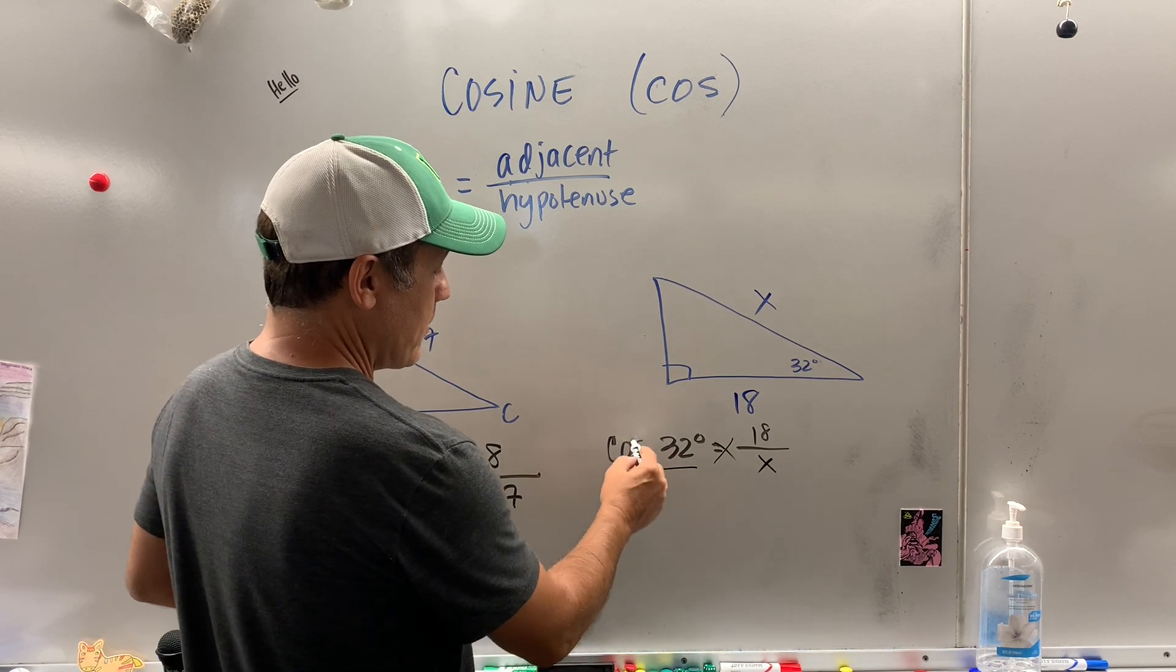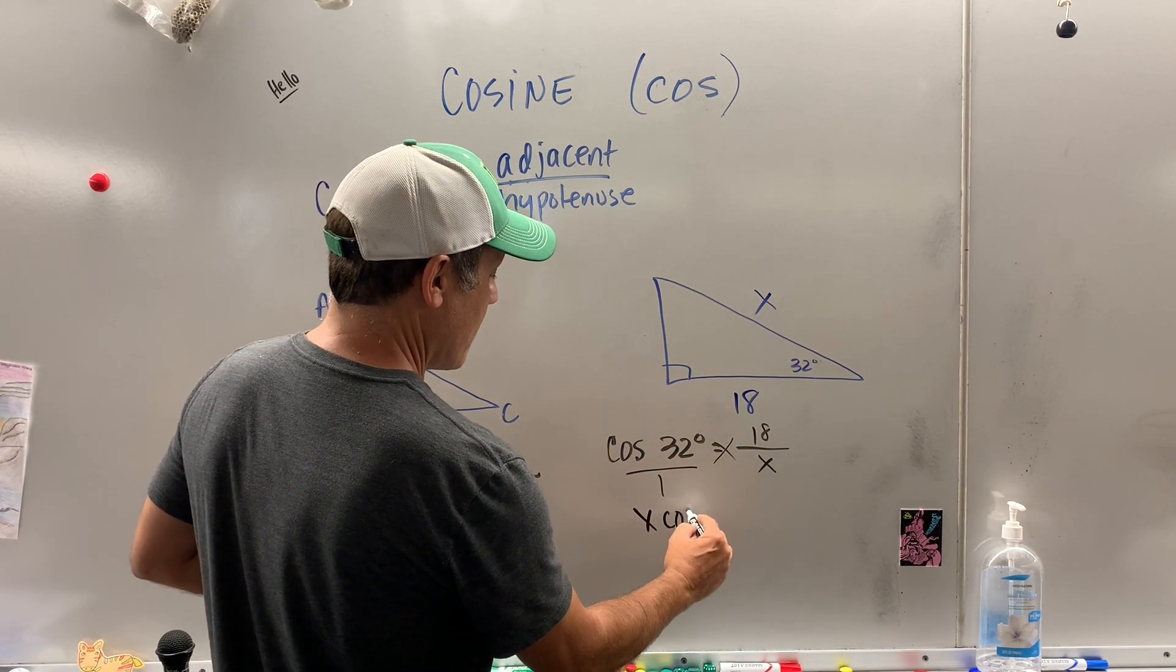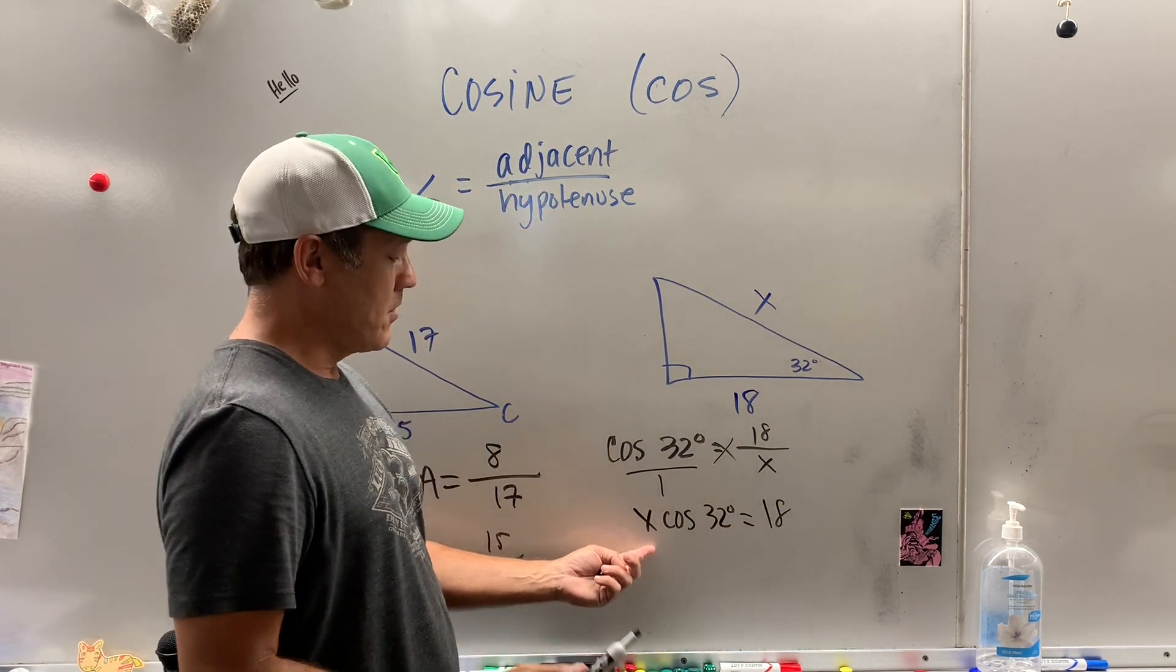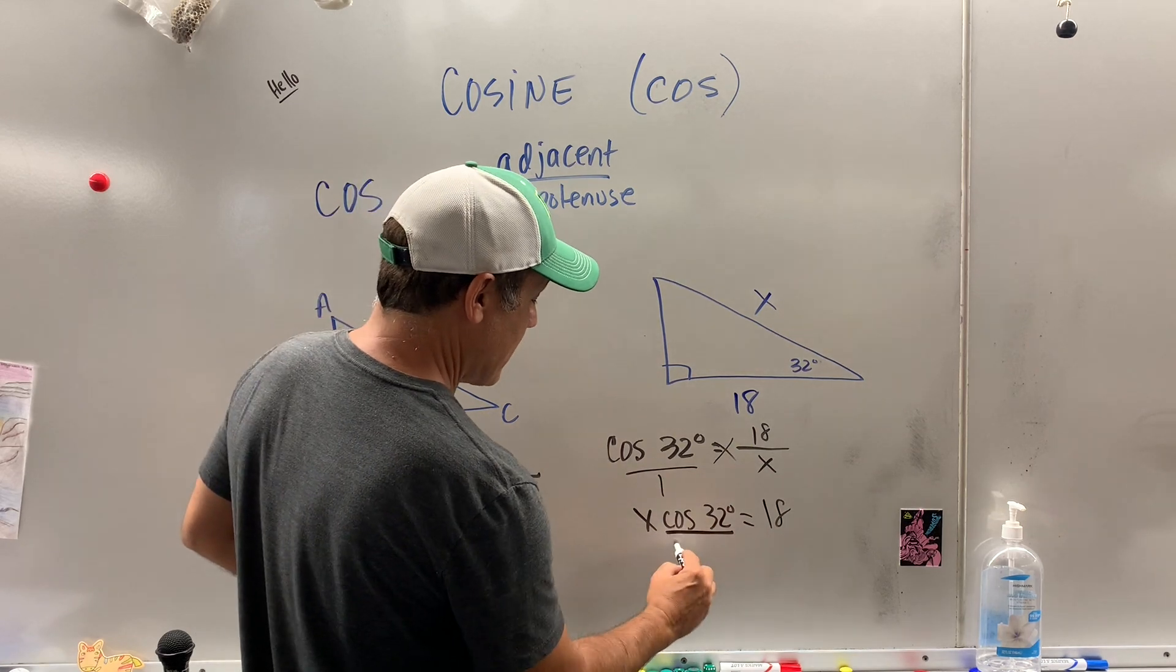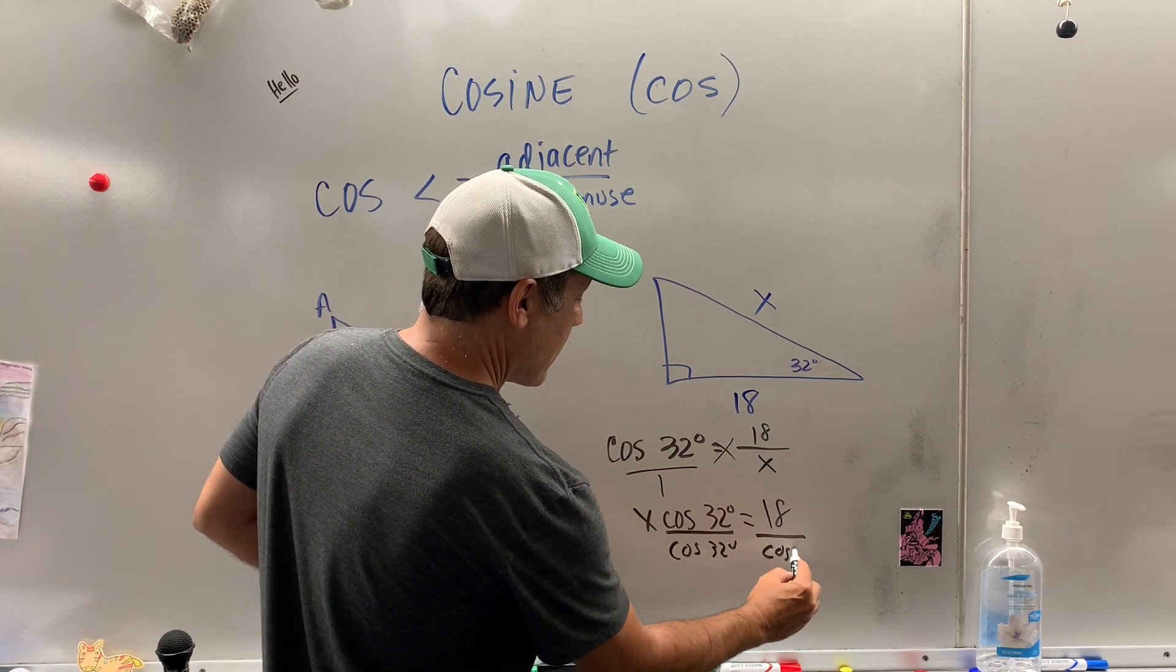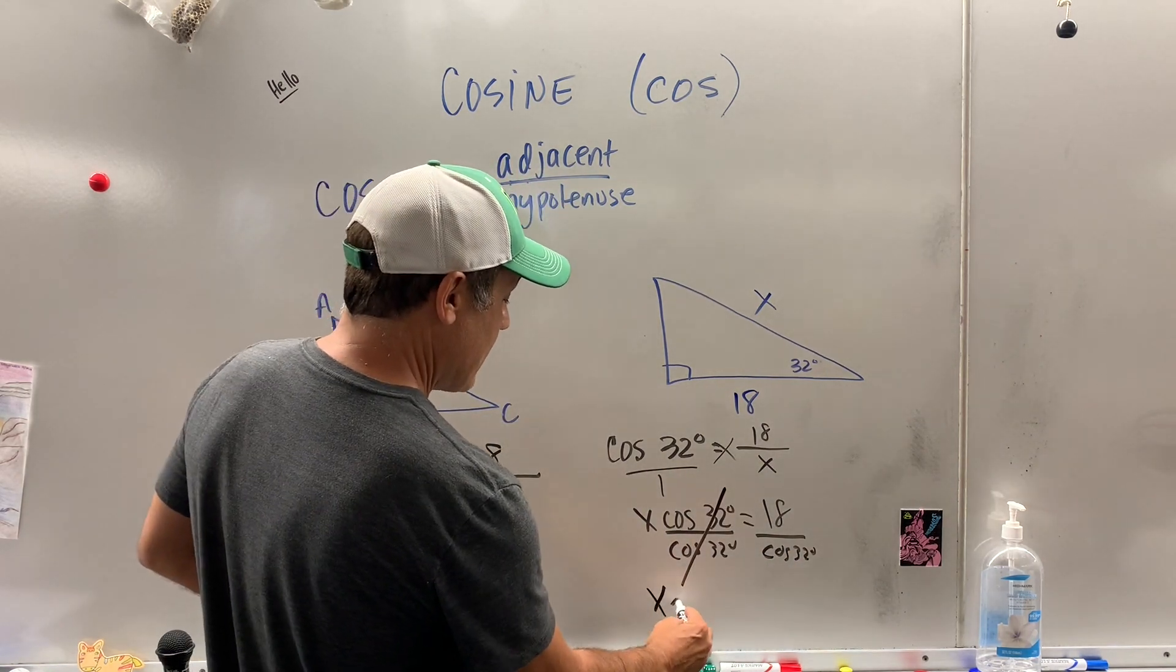Cross multiply, cosine of 32 times X. So you write it X cosine 32 degrees is equal to 18. How do you get X by itself? No big deal. Just divide by whatever's attached to it. Both sides divide by cosine of 32. That cancels.